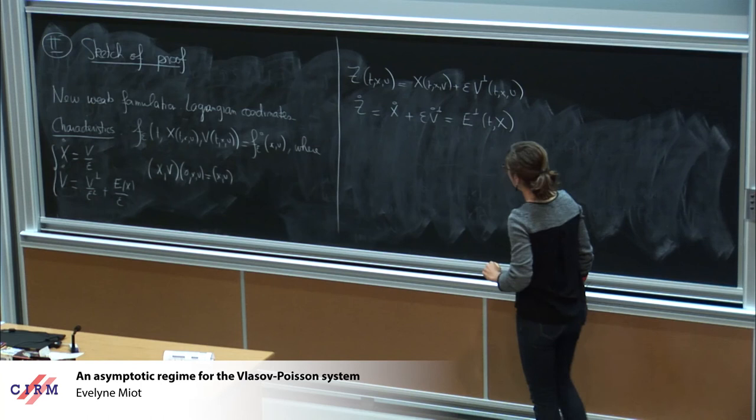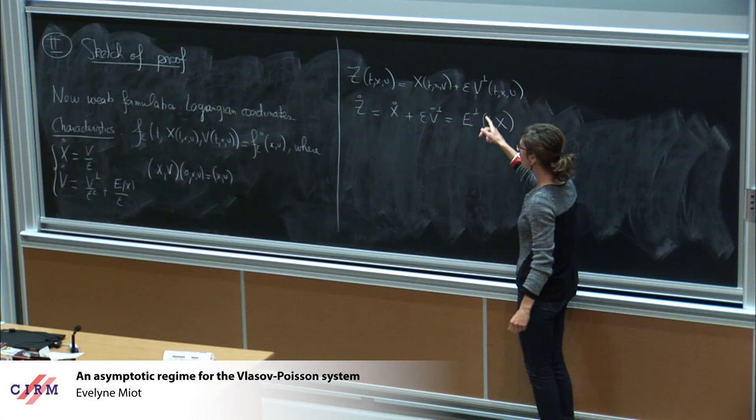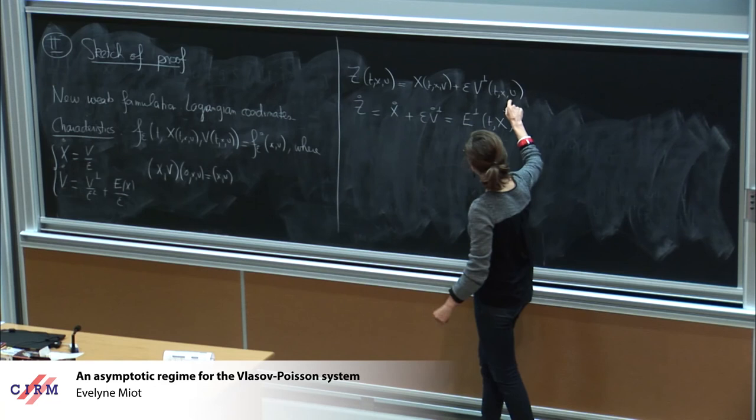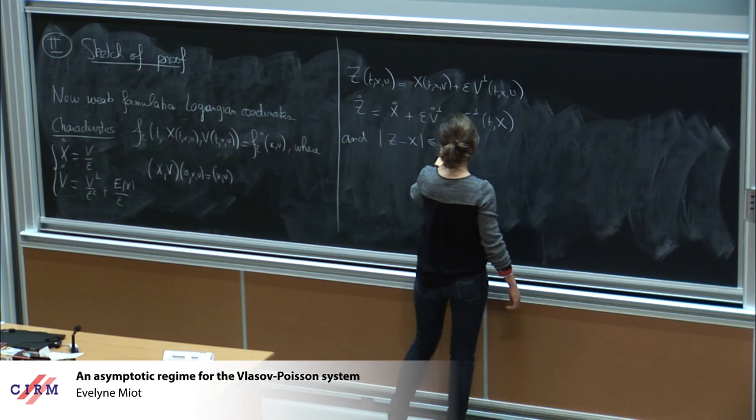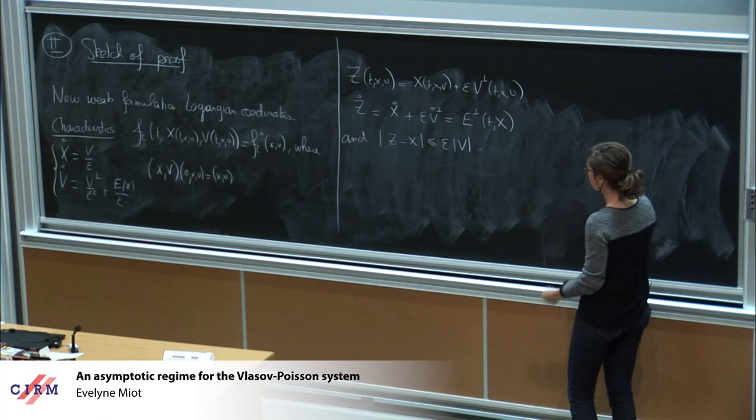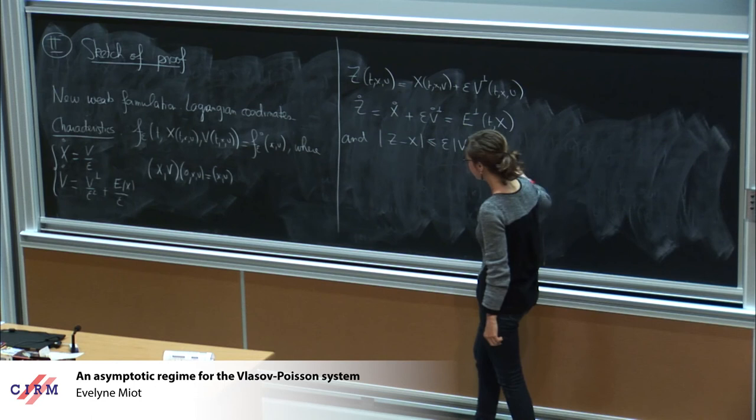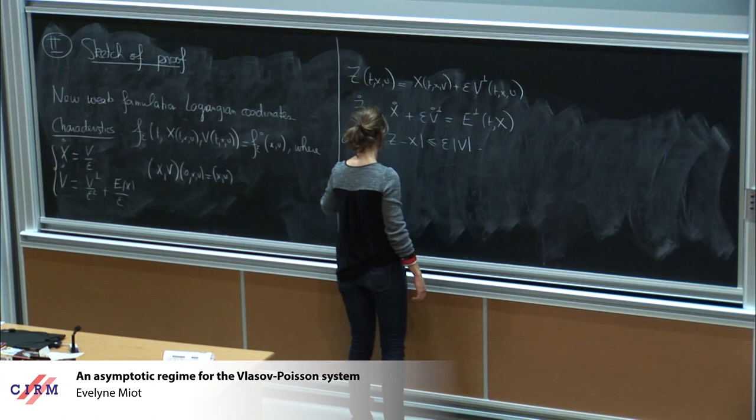In fact, we introduce a combination of X and V in the following way. We introduce Z equals X plus epsilon V perp. Then you see that you get rid of the diverging parts of the derivatives. Z dot equals X dot plus epsilon V dot perp, and this is actually equal to E perp of T, X. On the one hand, you get almost the same dynamics as Euler because you get this E perp term here. On the other hand, you see immediately that as epsilon goes to zero pointwise, Z and X are close to each other. You are close to the Euler dynamics because you know that for Euler the characteristics are given by X dot equals E perp of X.